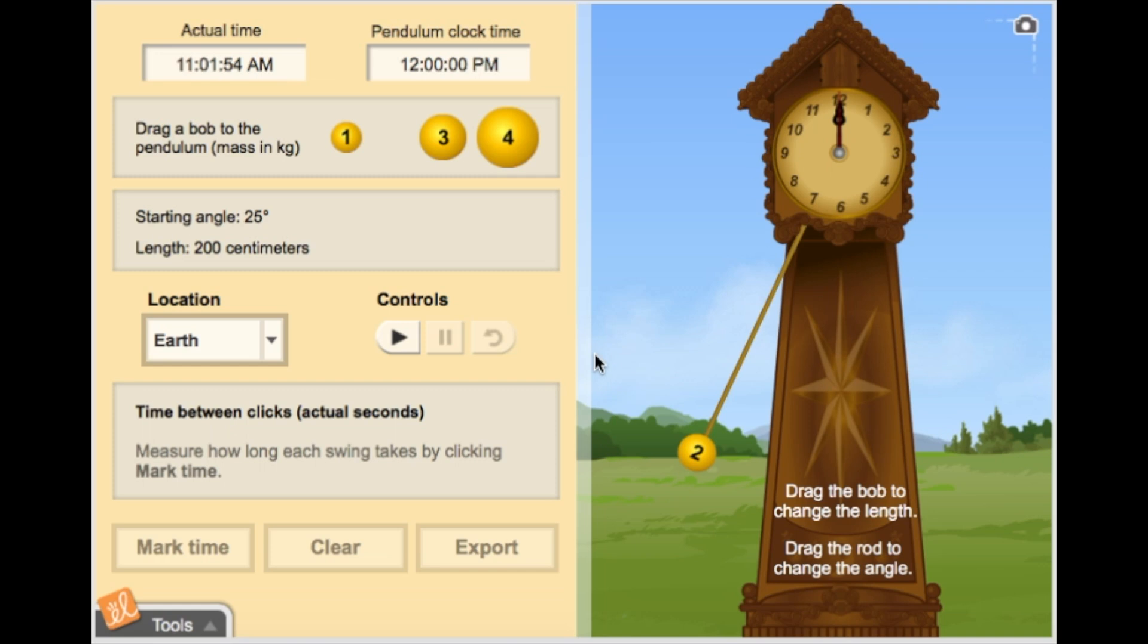The pendulum is attached to a clock that can be adjusted to tell time accurately. Our clock can be located on Earth or Jupiter to determine the effect of gravity.